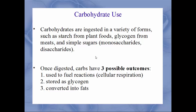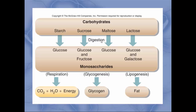Carbohydrates can come from various plant or animal sources, but whenever you ingest any kind of carbohydrate, one of three things will happen. First, it'll be used for fuel for chemical reactions such as cellular respiration. If it's not used right away, it'll be stored as glycogen, or it can be converted into fat through lipogenesis. For example, starch is broken down to glucose for cellular respiration; sucrose and maltose can be stored as glycogen; and lactose can be turned into fat. So the three possible outcomes are glycogenesis, lipogenesis, or cellular respiration.